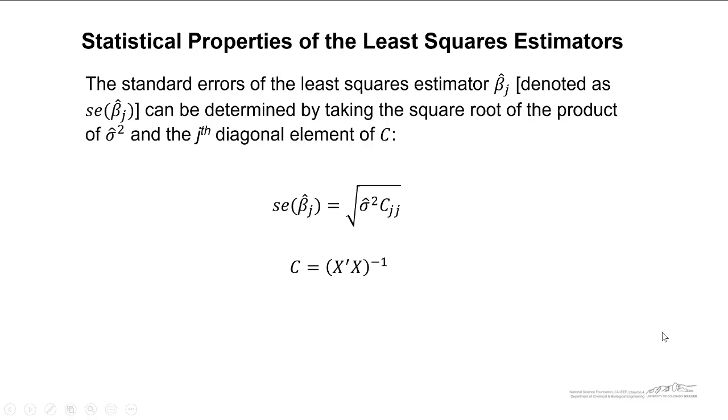So just as a reminder, we can compute the standard error of a least square estimator or a regression coefficient as the square root of our standard error squared times the jth diagonal element of this C matrix. The C matrix is just the inverse of X transpose times X. And so that's how we can obtain the standard error of an estimator.